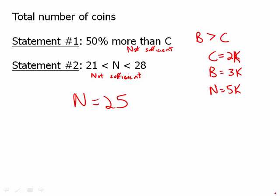And this would mean, incidentally, that Claire had 10 coins and Bert had 15 coins. And so combined, we can answer the question, and so that means together the statements are sufficient. Answer choice C.